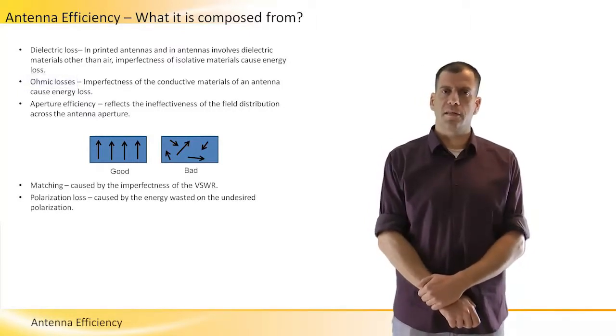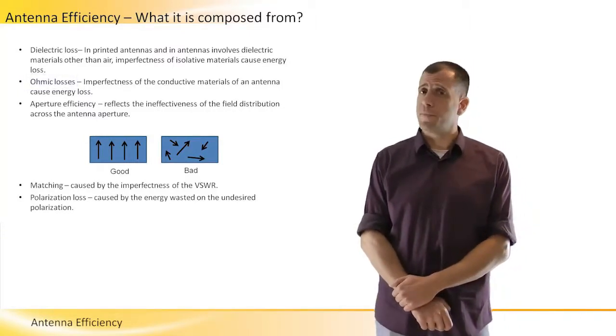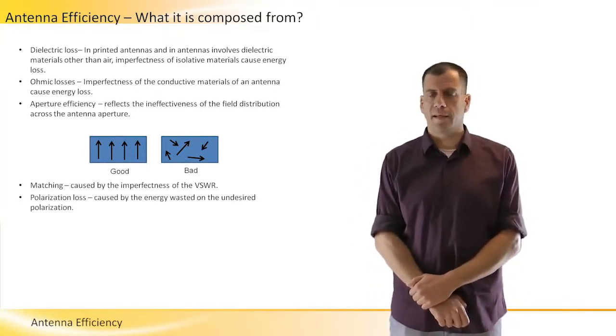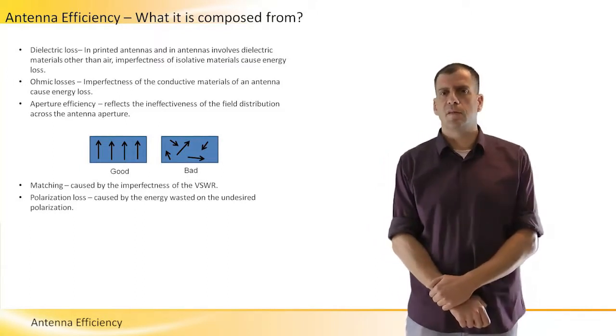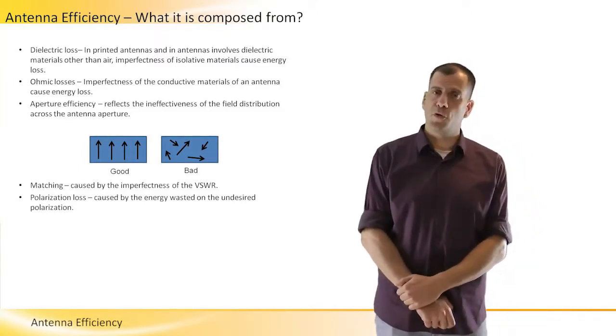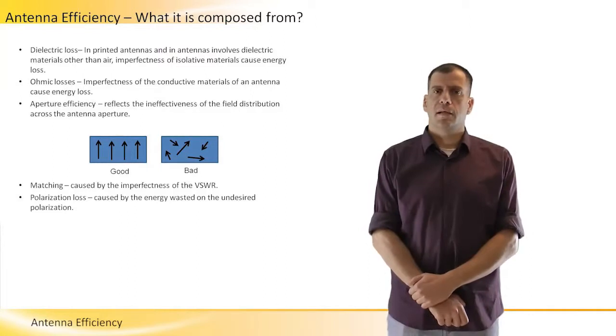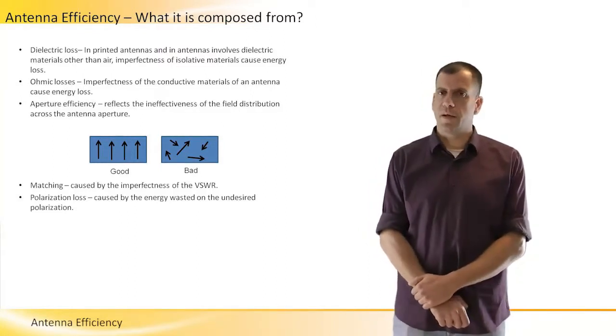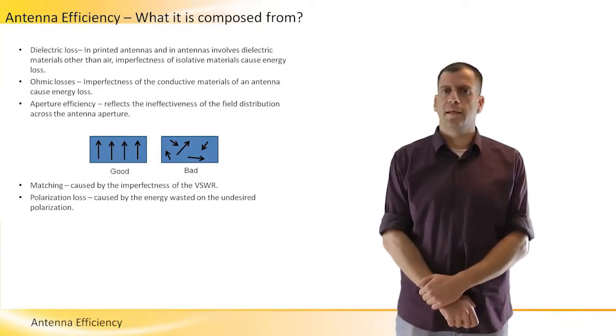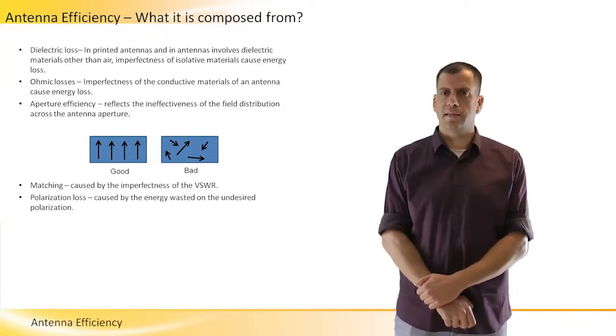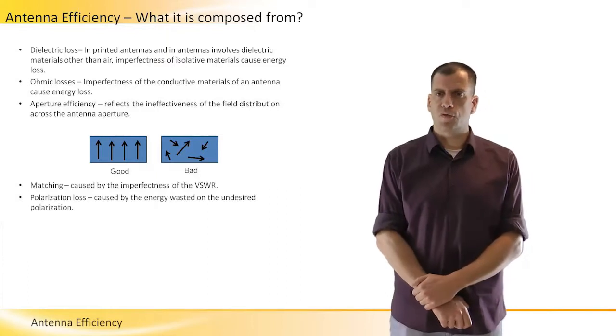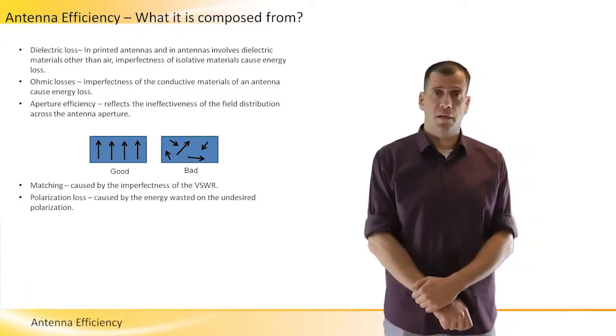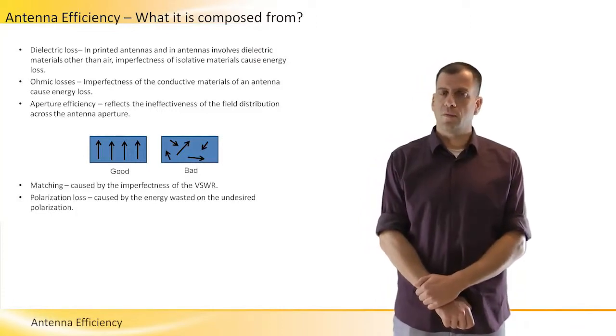Any conductor is imperfect. If we look at microstrip antenna again, planar antenna, it is implemented on printed boards. The printed boards use copper. The copper of course is a very strong, very good conductor, but still it is imperfect. If we have to travel with energy along the transmission line that is made of copper, then we will suffer some loss.